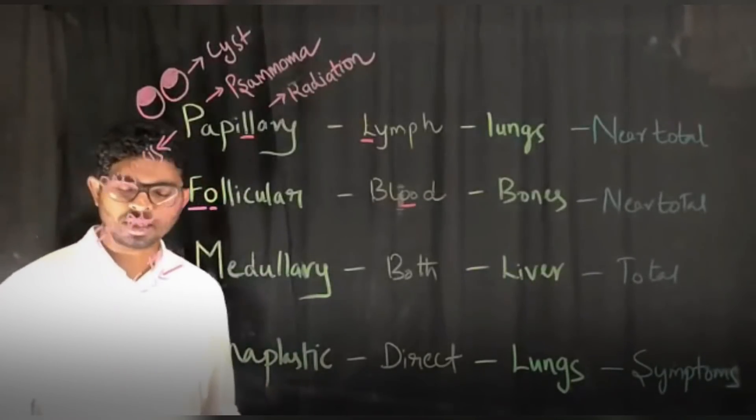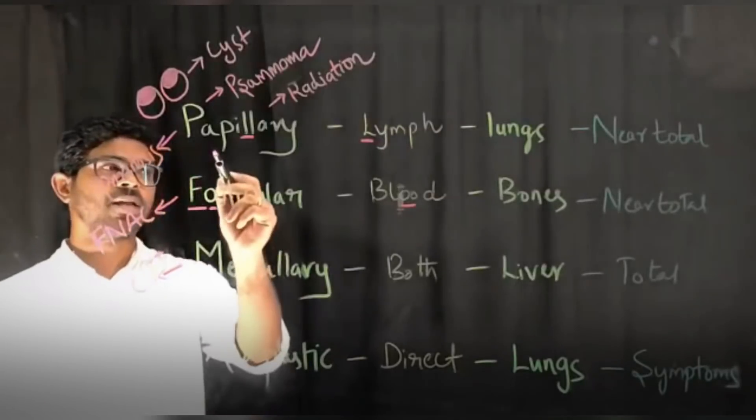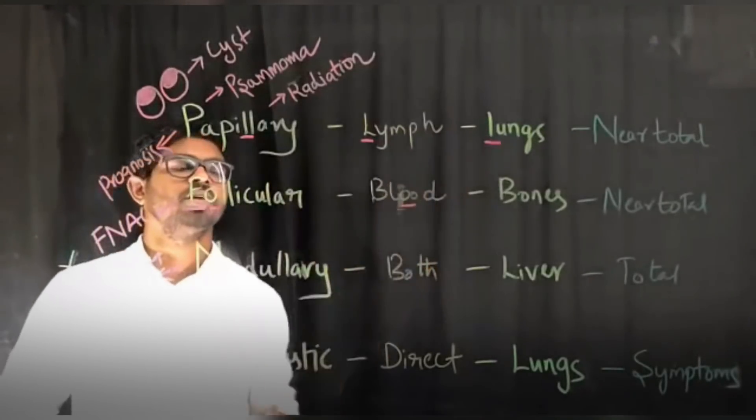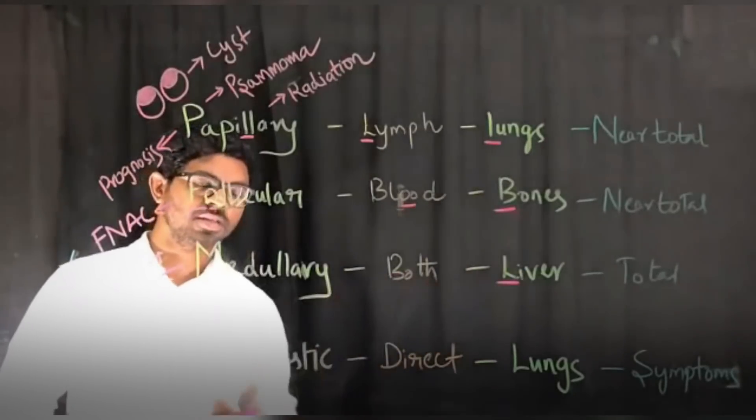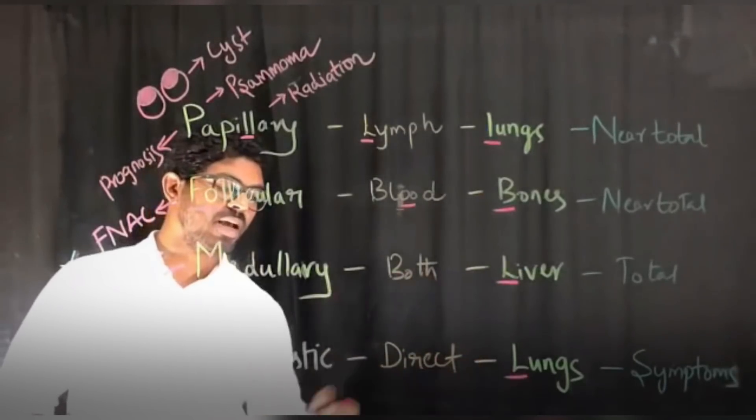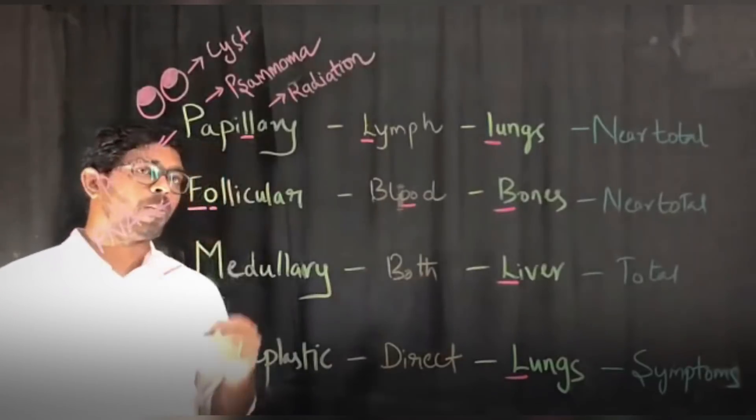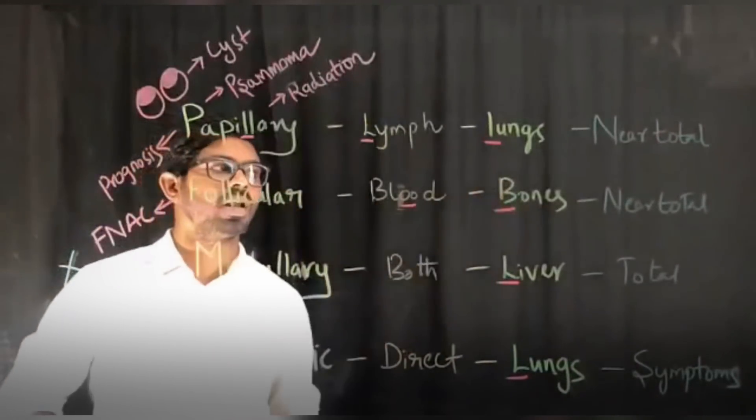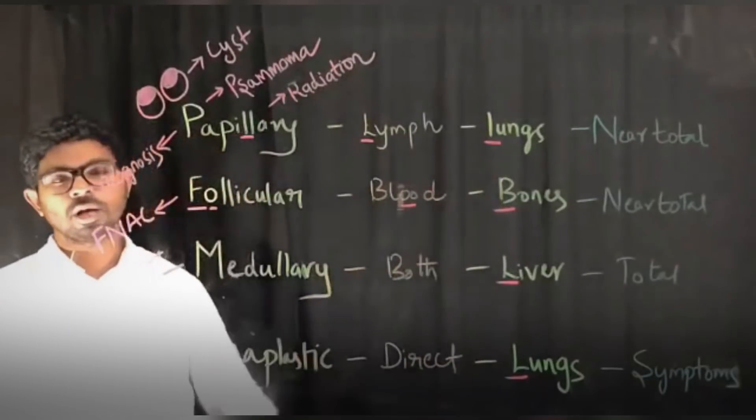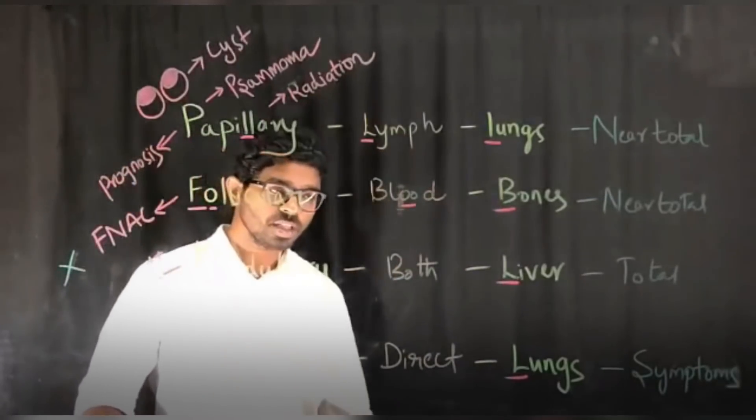Third is the most common site of metastasis. Papillary metastasizes to lungs, follicular to bones, medullary to liver, and anaplastic to lungs. Both anaplastic and medullary spread to lungs.